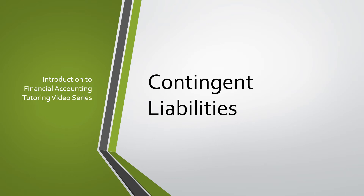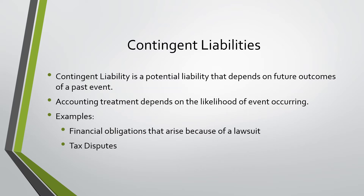Today we will be going over contingent liabilities. A contingent liability is a potential liability that depends on future outcomes of a past event. Accounting treatment depends on the likelihood of the event occurring. An example of a contingent liability is financial obligations that arise because of a lawsuit or tax disputes — something currently going through litigation where we don't know the outcome, whether we'll have to pay it or not.